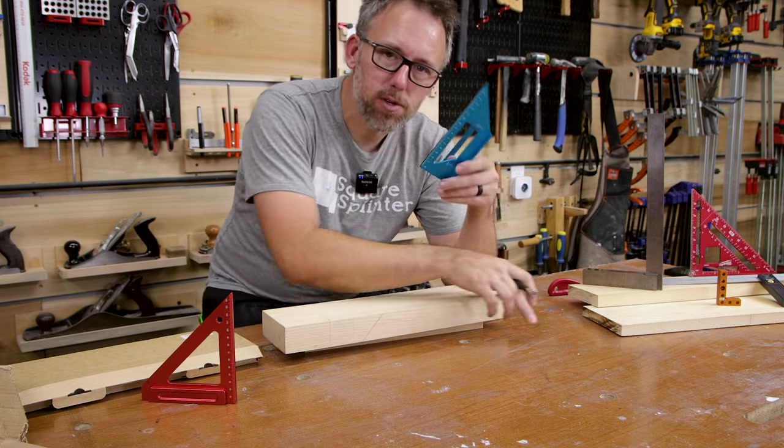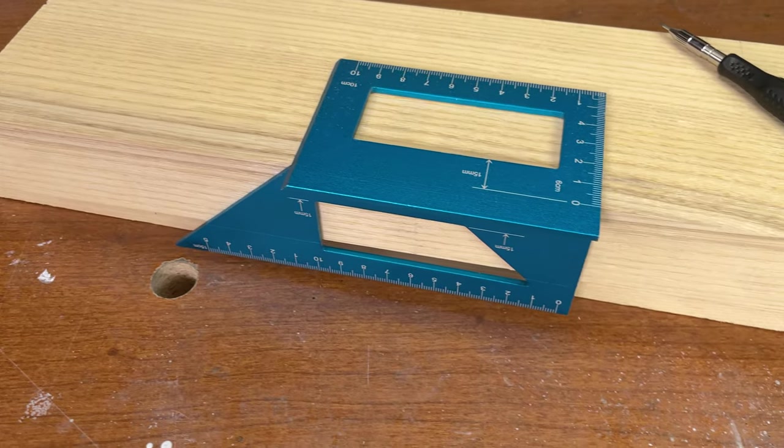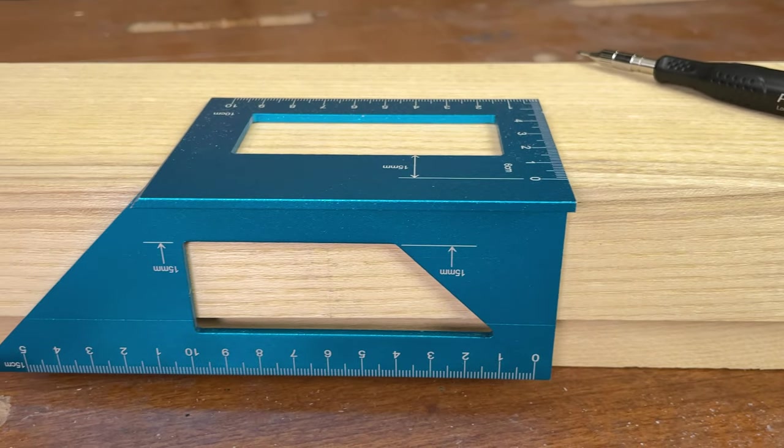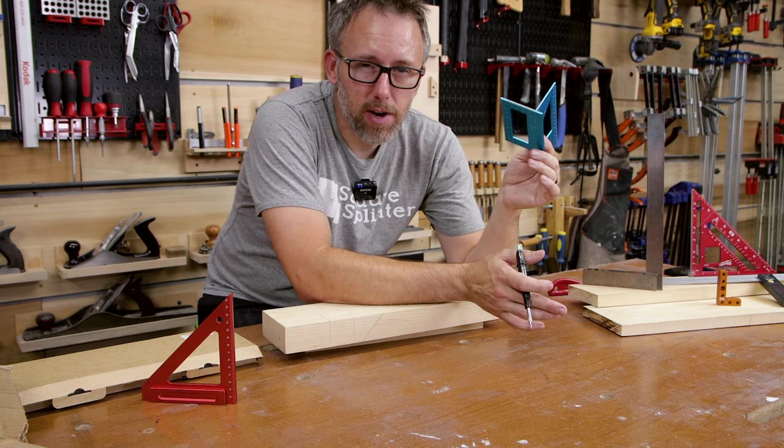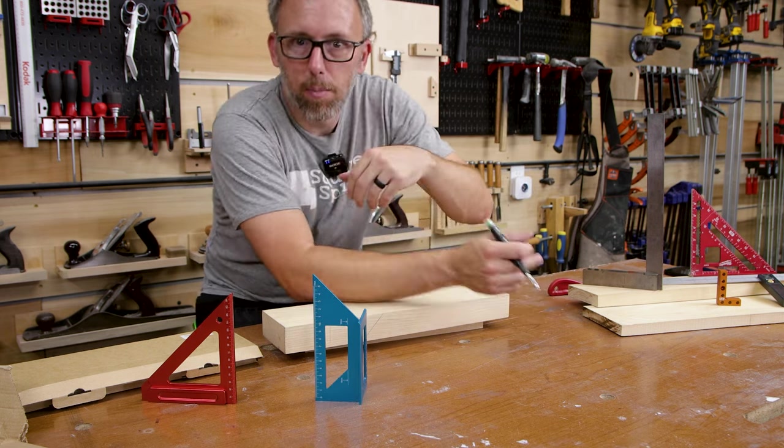But very simple. It's a chunk of aluminum. I got this about the same time I got that square. Super cheap. I want to say this is 15 or 20 bucks. I use it all the time, and it's super accurate. It's very handy to have around.